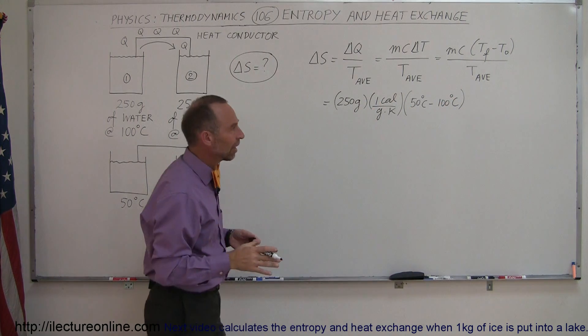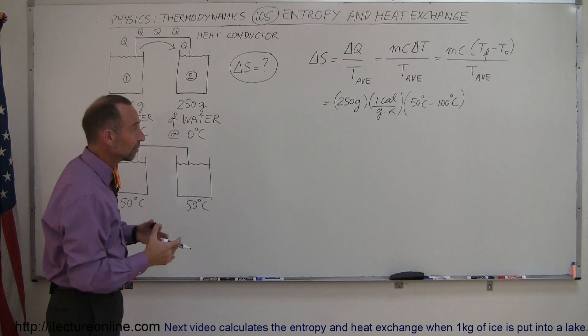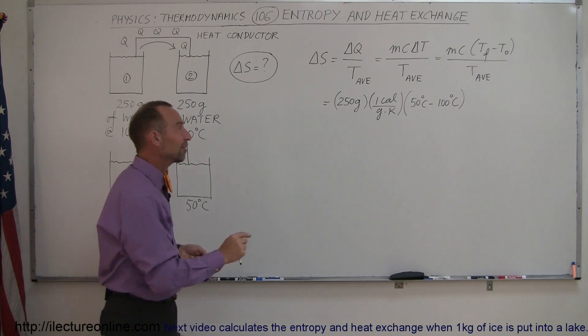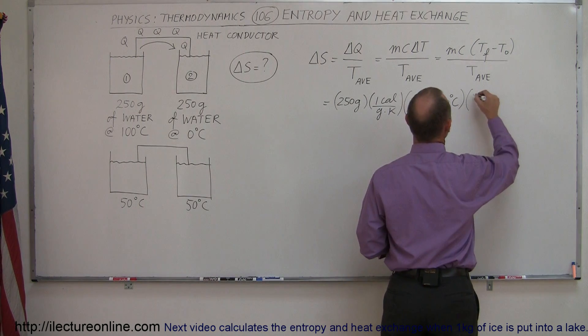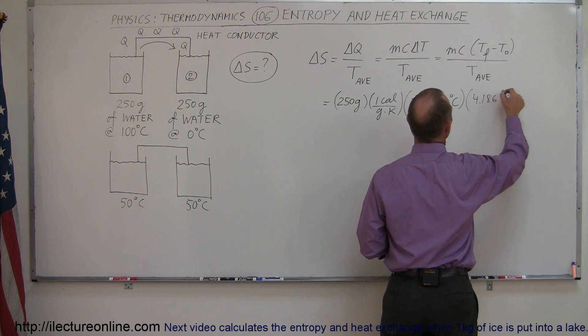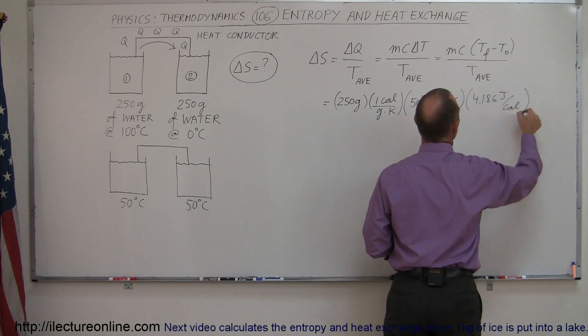Now, we don't have to convert that to Kelvin per se, because Kelvin degrees and centigrade degrees are about the same size. Now, we do have calories in there, and we want to convert that to joules, so we need a conversion factor of 4.186 joules per calorie.